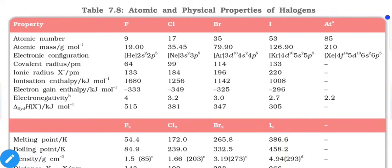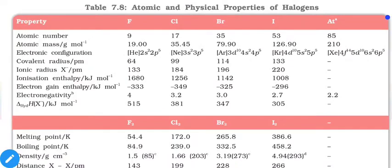Ionization enthalpy shows a similar trend because the elements behave in almost the same way. Electron gain enthalpy shows a slightly different scenario — all electron gain enthalpies are negative because electron gain is an exothermic reaction, whereas ionization (removal of an electron) is endothermic and therefore always positive.